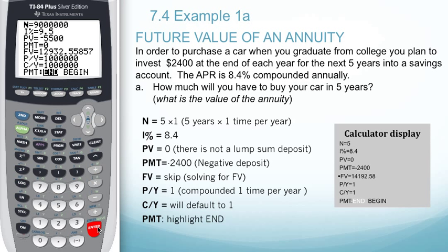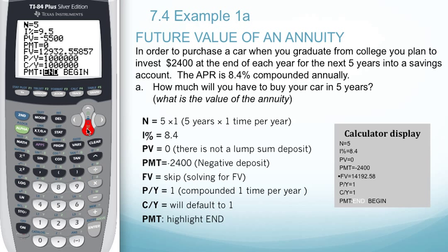We want to go ahead and enter in the values for this particular problem. For N, we will have the number of years, which is five, times the compounding period, which is one. Five times one is just five. Our interest rate is 8.4%, so we'll enter in 8.4.